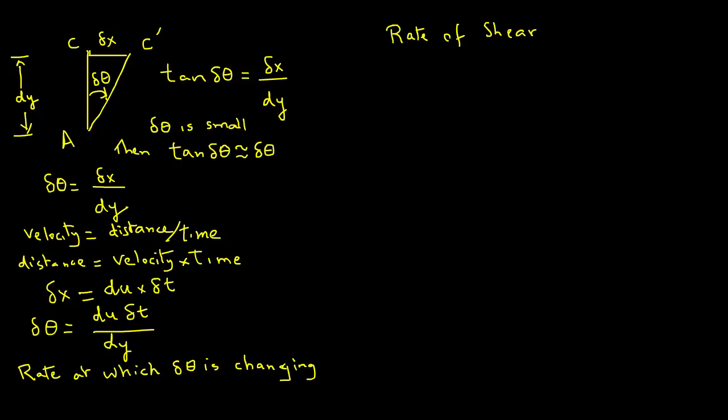So the rate of shear, which is expressed as Greek letter gamma, and we will put a dot on it, equals the limit of delta theta over delta t. Delta theta was the deflection of that line from AC to AC dash, and we are saying that that deflection divided by the time it takes for it to deflect is the rate of shear. We put that dot because this term has time.